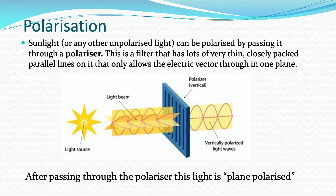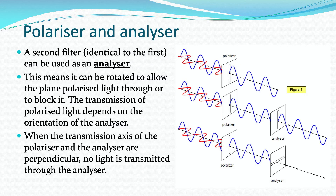Unpolarized light can be forced to have a single transmission axis — a single plane in which the electric field vector travels — and you do that by passing your unpolarized light through a material called a polariser. It's a filter that has lots of very thin, closely packed parallel lines on it, which only allows the light to be transmitted in a single plane on a single transmission axis. So after passing through the polariser, this light is said to be plane polarised. A second filter, which is identical to the first, can be used as an analyser. It can be rotated to allow the plane polarised light through, or it can be completely blocked. So the transmission of the polarised light depends on the orientation of the analyser.